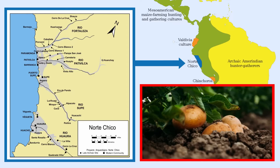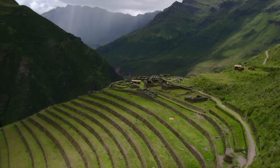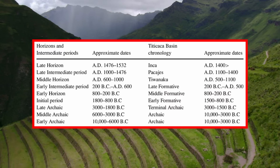The most intensively used crops by these people were potatoes and beans, among several others. After the decline of the Norte Chico civilization, city-states were spread throughout the Andean region. After this, Andean chronology is categorized by three horizons, separated by intermediate periods.